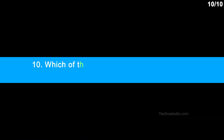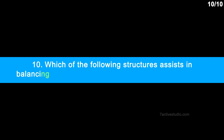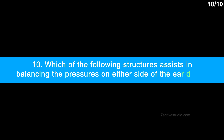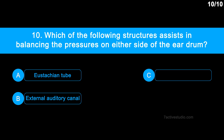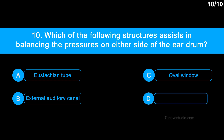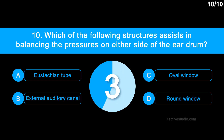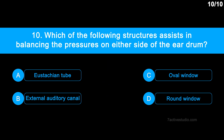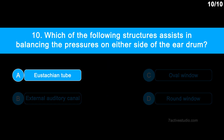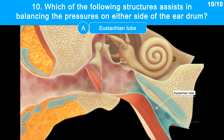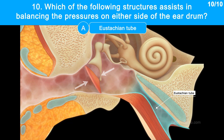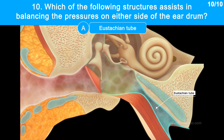Question No. 10: Which of the following structures assists in balancing the pressures on either side of the eardrum? Option A: Eustachian tube. Option B: External auditory canal. Option C: Oval window. Option D: Round window. The correct answer is Option A: Eustachian tube. The Eustachian tube balances the pressure on either side of the eardrum by connecting the middle ear cavity and the pharynx.